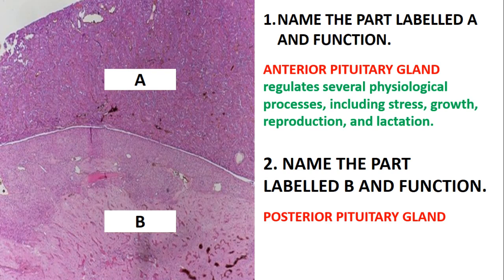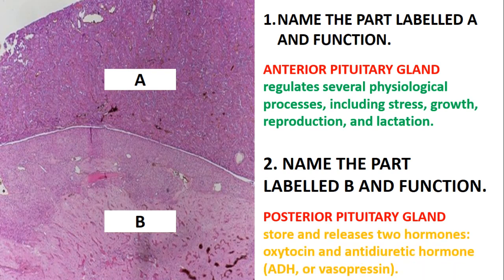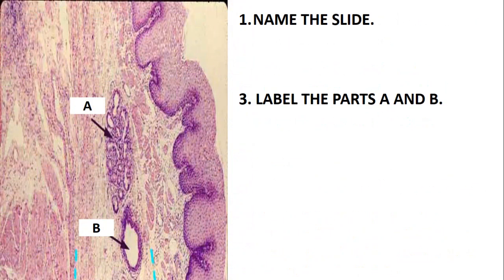Name the part labeled B and its function. Part B is just the posterior pituitary gland, and the function is to store and release two hormones. These two hormones are oxytocin and ADH, also known as vasopressin.